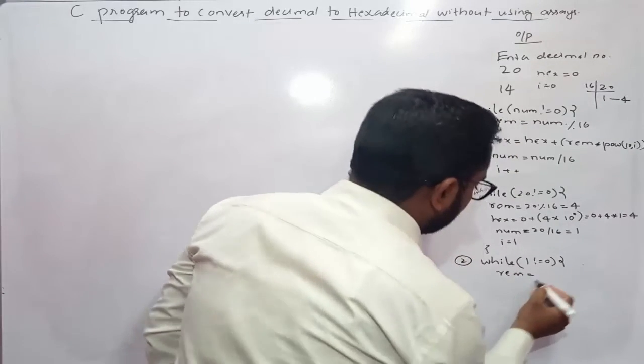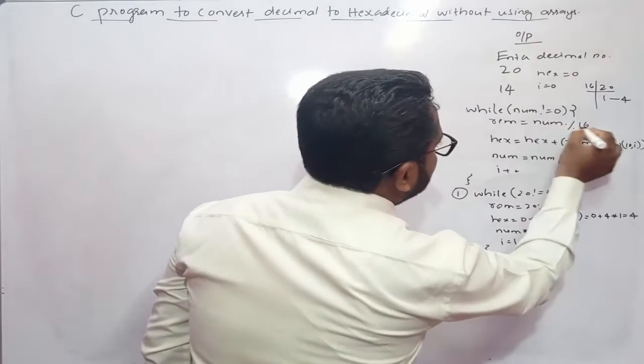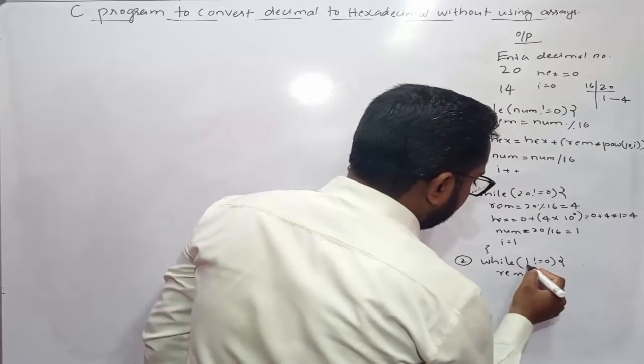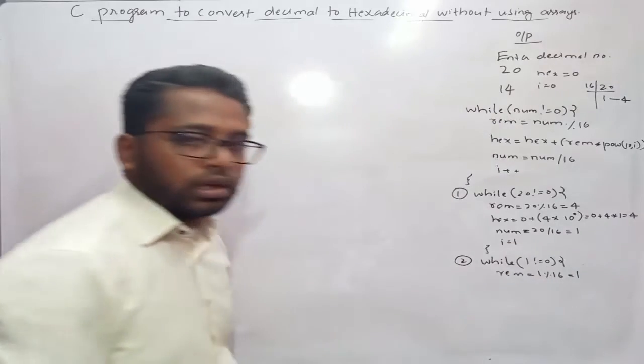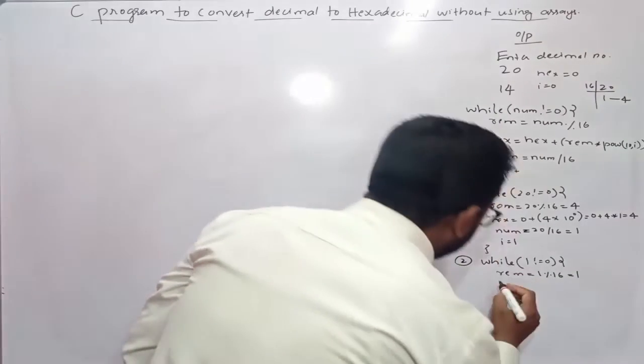Remainder equals num, so num is 1 mod 16, which equals 1. Next hex, hex equals hex value.